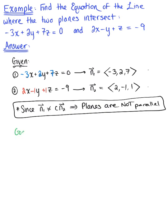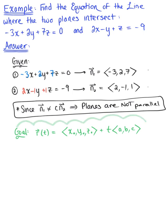So the goal: we want to find the vector-valued function defining this line of intersection. We're looking for that vector-valued function, vector r of t, defined by the position vector x-naught, y-naught, z-naught, plus the arbitrary parameter t multiplied by the parallel vector with components a, b, c. In reminding ourselves of this vector-valued equation of a line in space, we realize that we need to find a point and a vector that is parallel to this line.